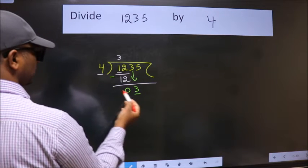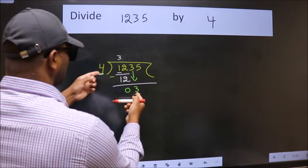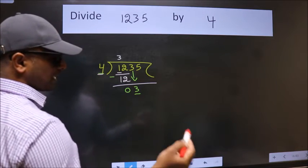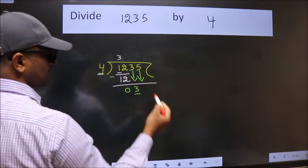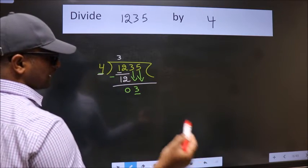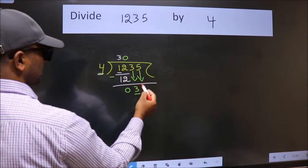Now here we have 3, here 4. 3 is smaller than 4, so we should bring down the second number. And the rule to bring down the second number is put 0 here. Then only we can bring this number down.